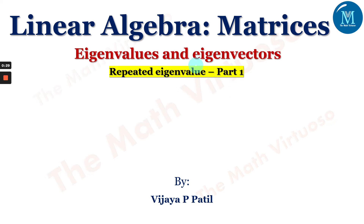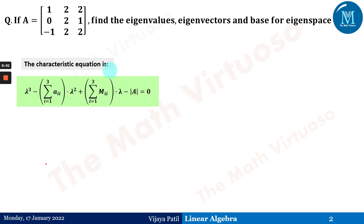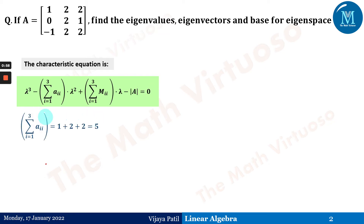A capital matrix A is given to us as a three-by-three matrix. We have to find the eigenvalues, eigenvectors, and the basis for the eigenspace. The characteristic equation of this three-by-three matrix is: lambda cubed minus (summation of a_ii, i from 1 to 3) times lambda squared plus (summation of M_ii, i from 1 to 3) times lambda minus determinant of A equals zero.